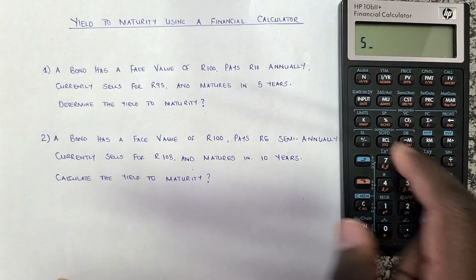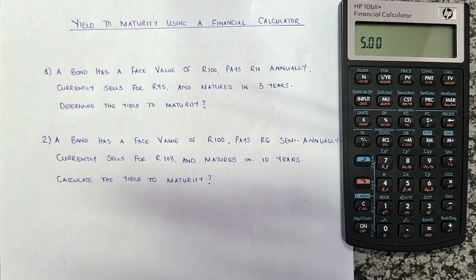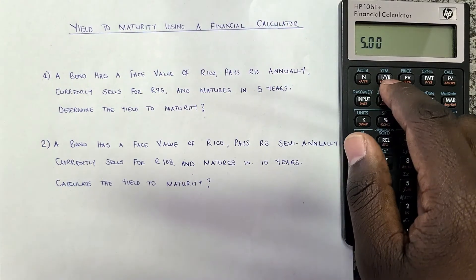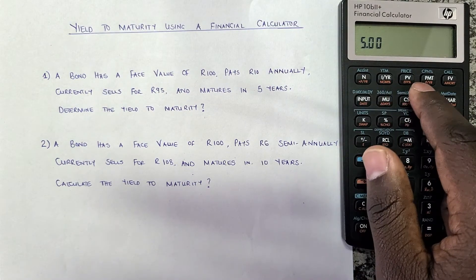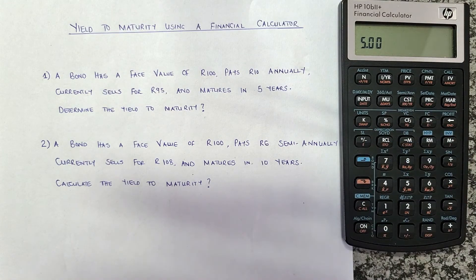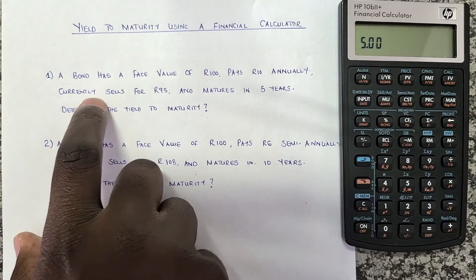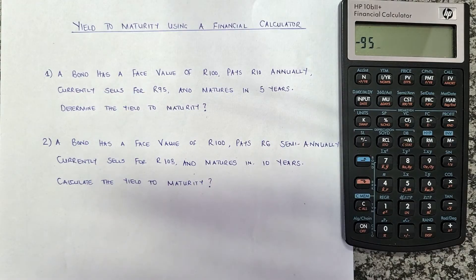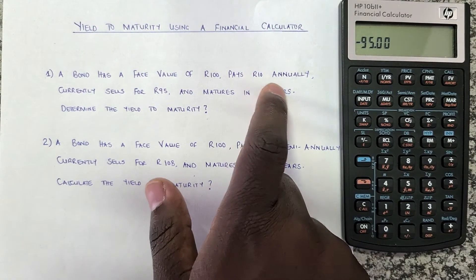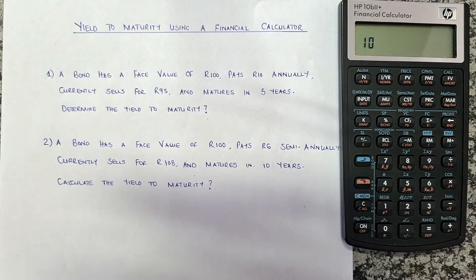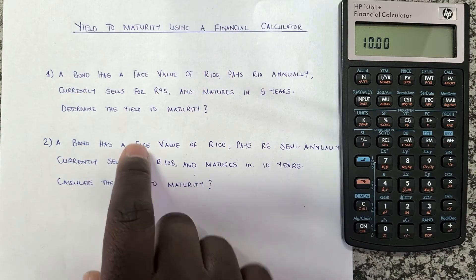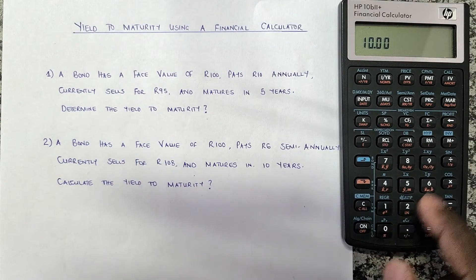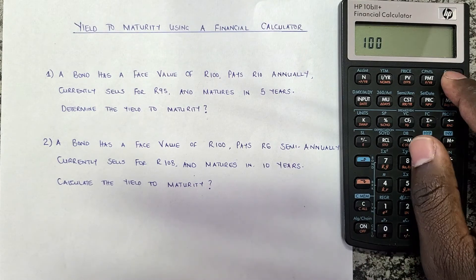Now let's enter the values. For five years, press 5 and then N — since it's compounded once per year, that's all we need. We're looking for I/YR, which is our yield to maturity, so we skip that. For the present value, the bond currently sells for 95 rand, so press 95, then the plus/minus sign to make it negative — this is the amount the bondholder pays today — then press PV. Next, enter the payment of 10 rand, leave it positive, and press PMT. The future value is the face value of 100 rand; leave it positive and press FV.